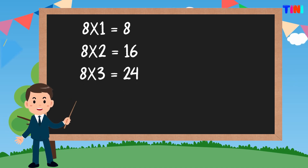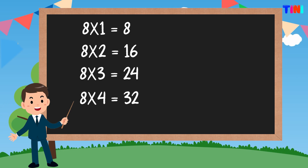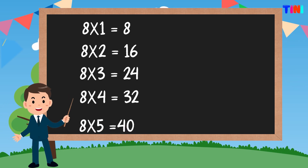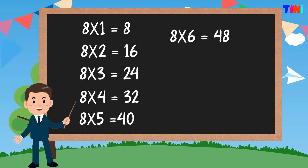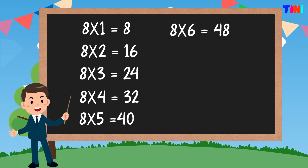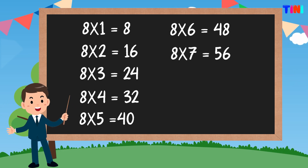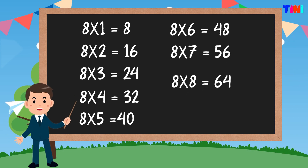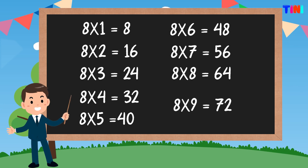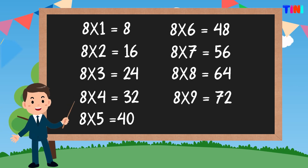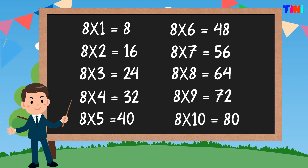8 threes are 24. 8 fours are 32. 8 fives are 40. 8 sixes are 48. 8 sevens are 56. 8 eights are 64. 8 nines are 72. 8 tens are 80.